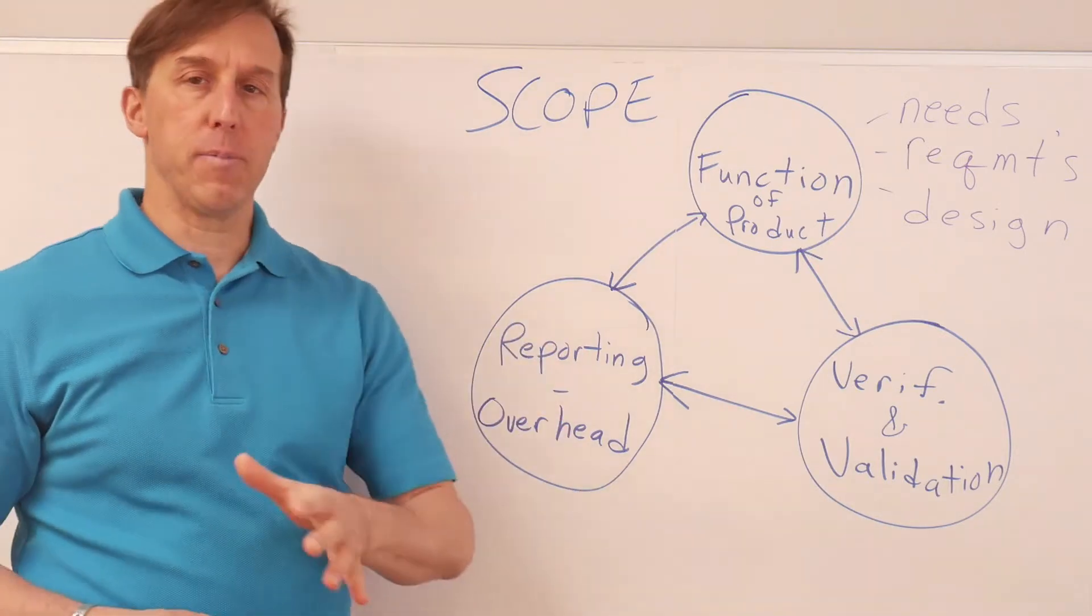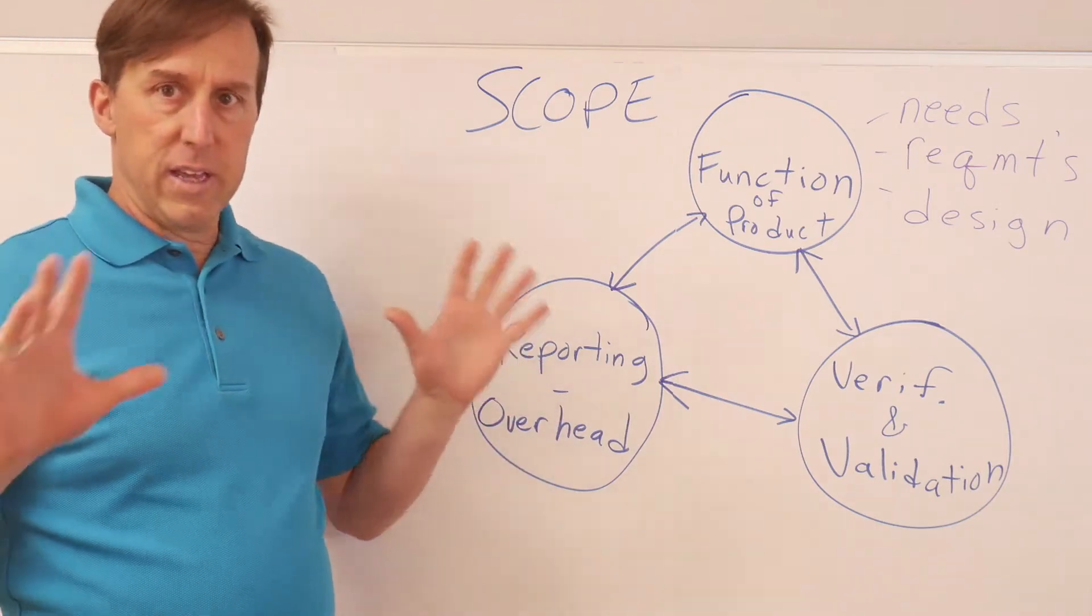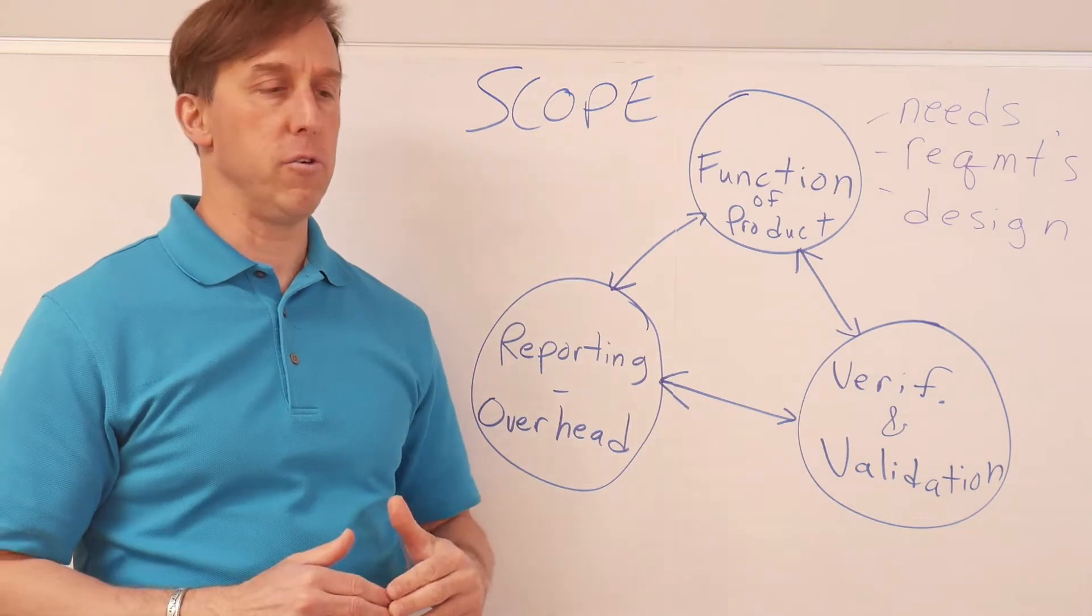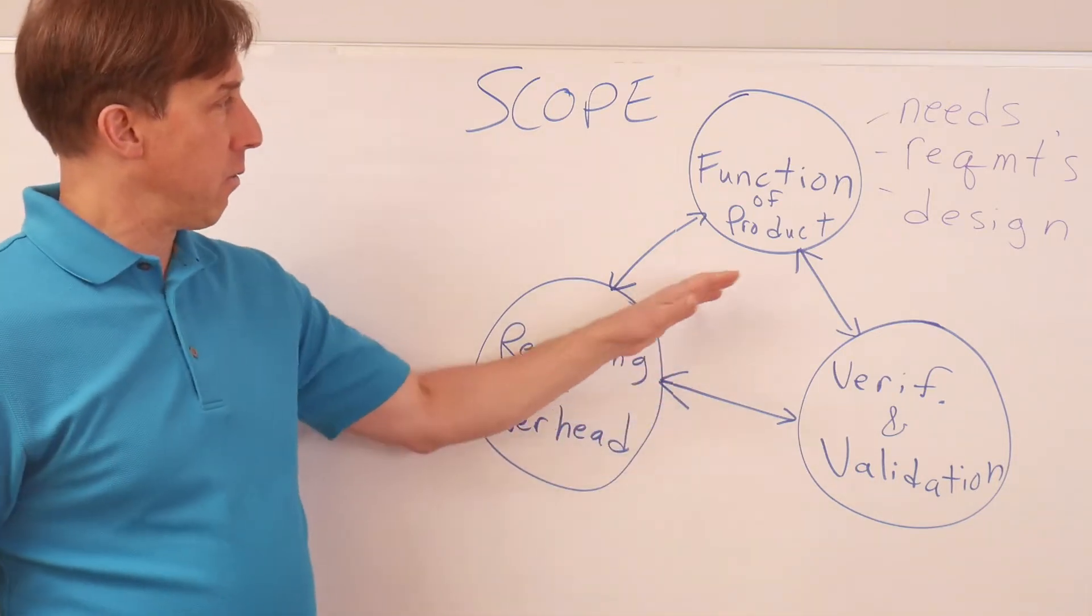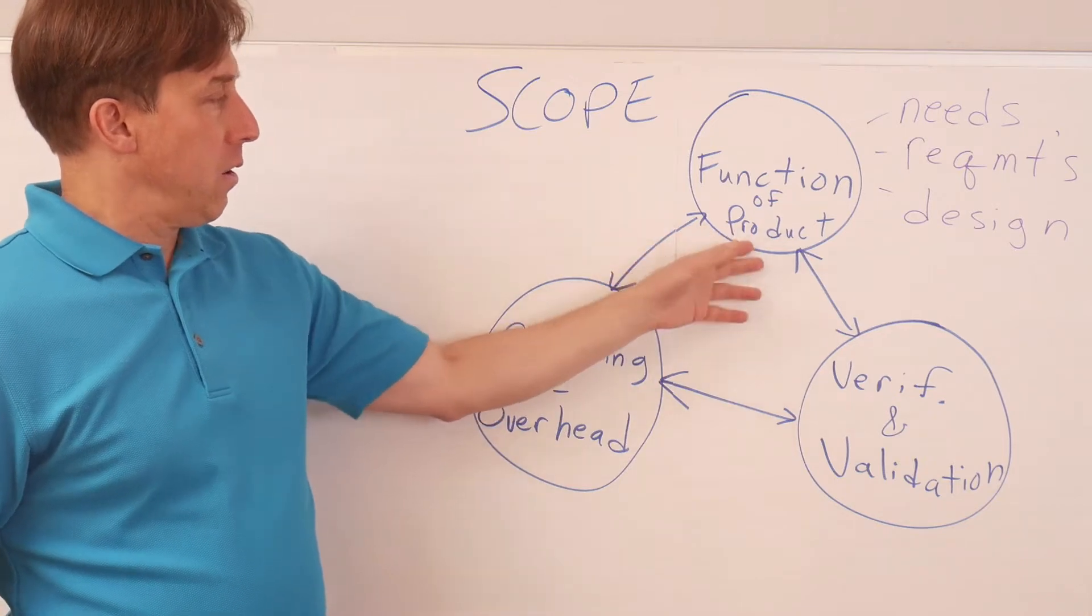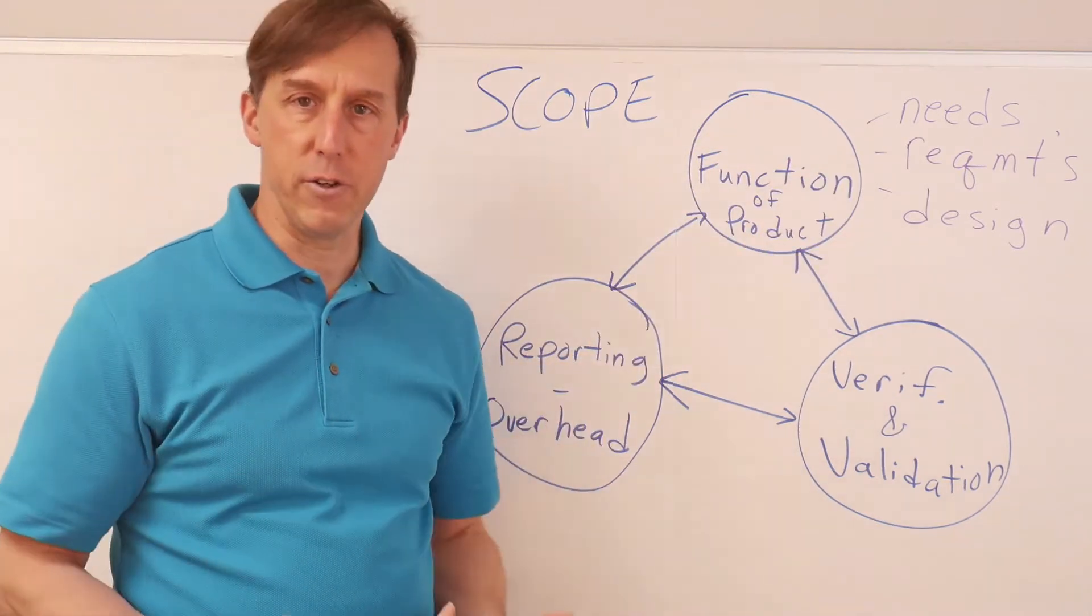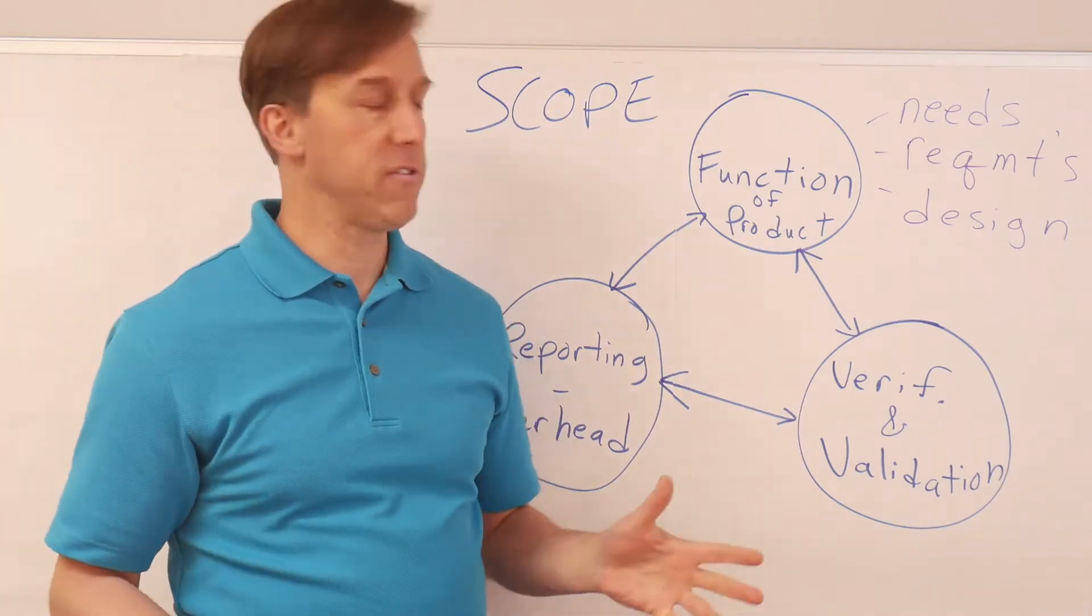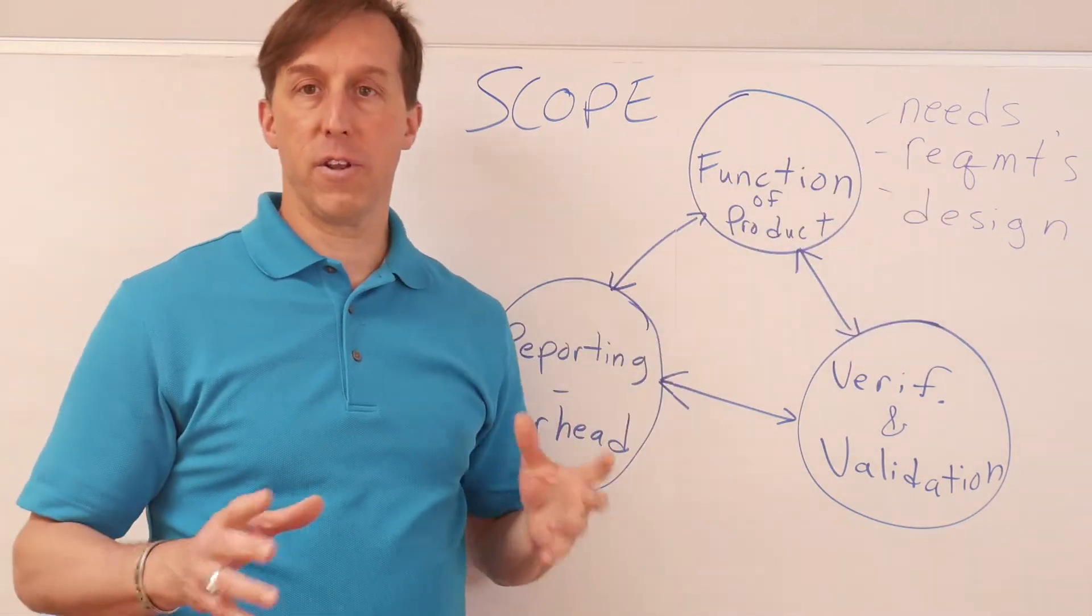Now, one thing that may help you is to break scope into three different sessions. We're going to talk about a larger project, but this can scale down into smaller tasks and even your individual work. If you start with the function of a product, so what does it need to do? What functions does it have? What are the requirements? You can also say, what needs does it satisfy? So you've got needs, requirements, and then the design.